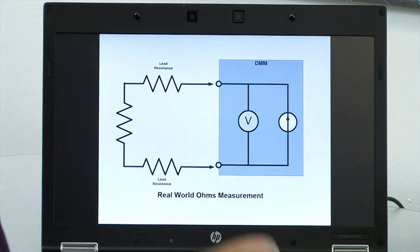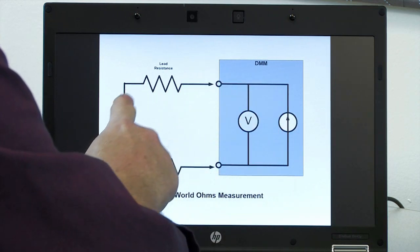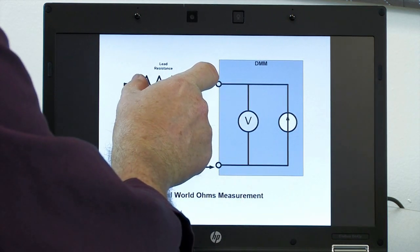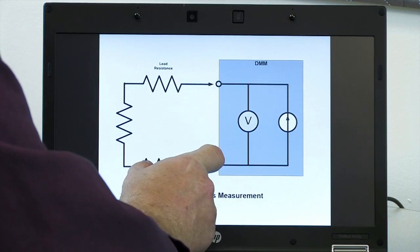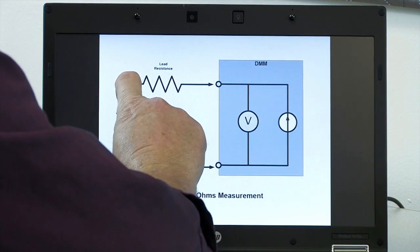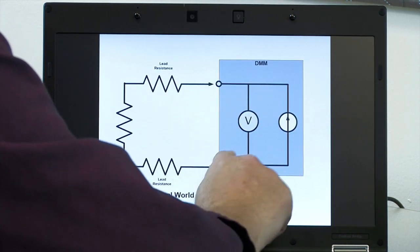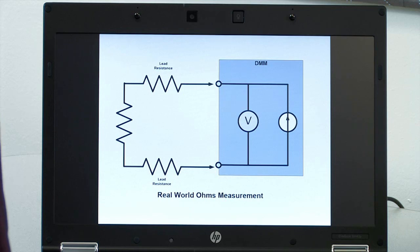So it'll be introducing errors because as the current goes through this loop it'll generate a voltage across here, a voltage across here, across the leads and also across the unknown. And you're measuring the voltage of all three so you have an error introduced into your system.